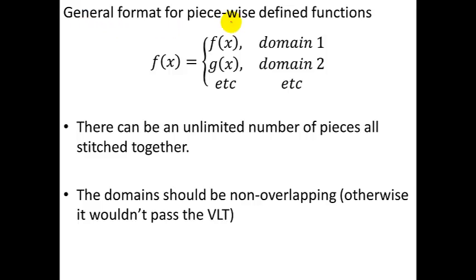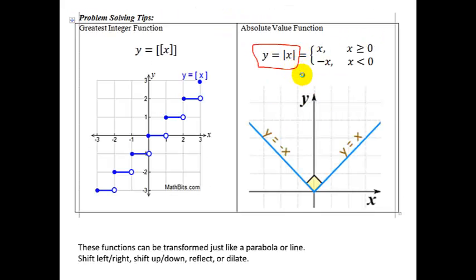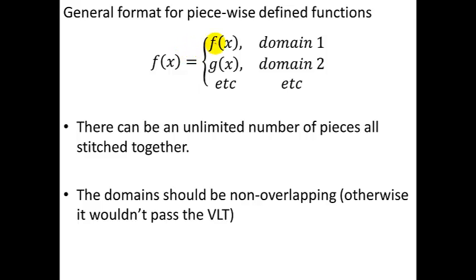For piecewise functions, you can define any number of sections. You write f(x) equals and then put all the different pieces — for example, 2x + 5 or x² - 3 — and put the specific function followed by the domain or location where you want to use it. You can have an unlimited number of sections: two pieces, three pieces, fifty pieces. Just make sure your domains don't overlap, because if they overlap, you won't pass the vertical line test and it won't be a function.